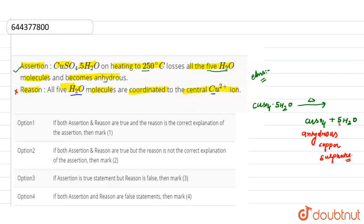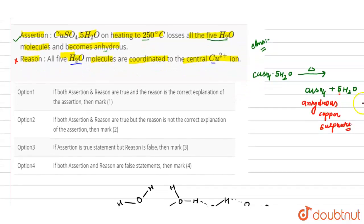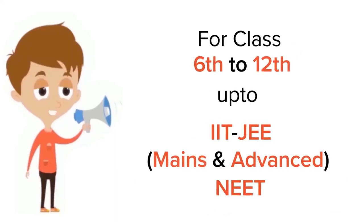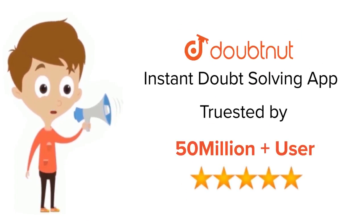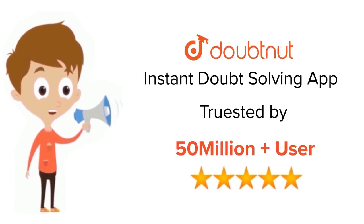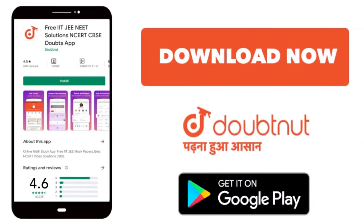So the assertion is true but the reason is false. Looking at the options, option three states that assertion is true but reason is false — so option three is our correct answer. For class 6–12, IIT JEE, and NEET level, trusted by more than 5 crore students, download the DoubtNut app today.